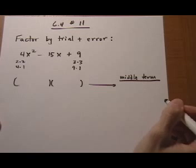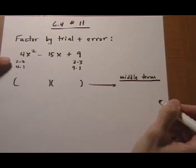6.4 number 11. Another trinomial and we want to factor by trial and error. So let's first look at the different factors of the first term.